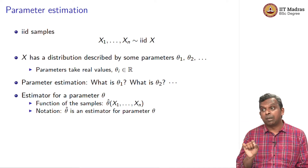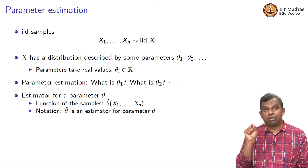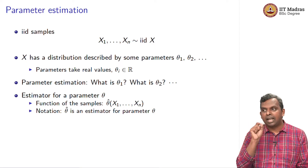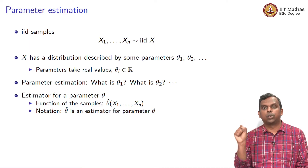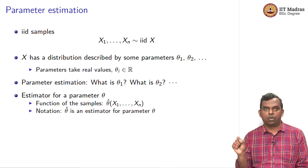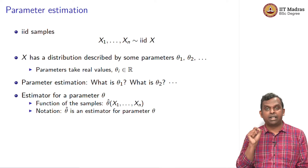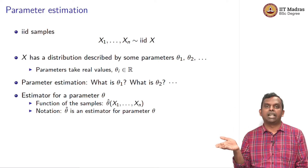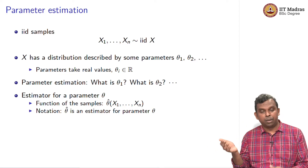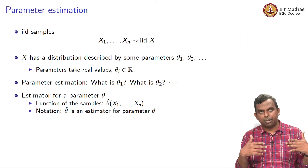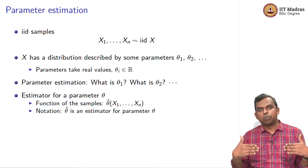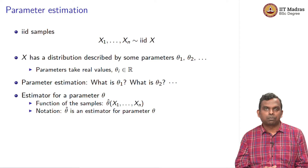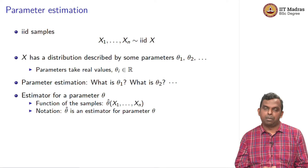An estimator, remember, is a function — a function of the n IID random variables x1 through xn. The estimator is a function: you give it the samples, it puts out some real number. The output is a real number, the input is all the samples, and that number is considered the estimate.